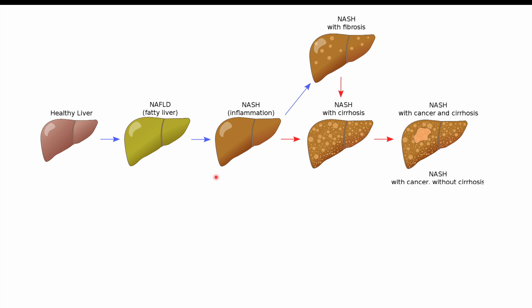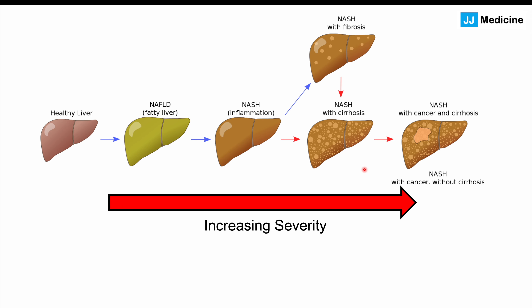Authors also looked at how the severity of NAFLD and related conditions affects infection risk. Non-alcoholic fatty liver disease is the first step in a progression of severity. Fatty infiltration leads to NAFLD, which over time can lead to inflammation known as NASH (non-alcoholic steatohepatitis). That inflammation can lead to liver cell damage and fibrosis or scarring of the liver. Up to this point, reversal is possible, but eventually enough scar tissue accumulates that liver cells cannot regenerate, leading to NASH with cirrhosis. These patients are also at higher risk for hepatocellular carcinoma.